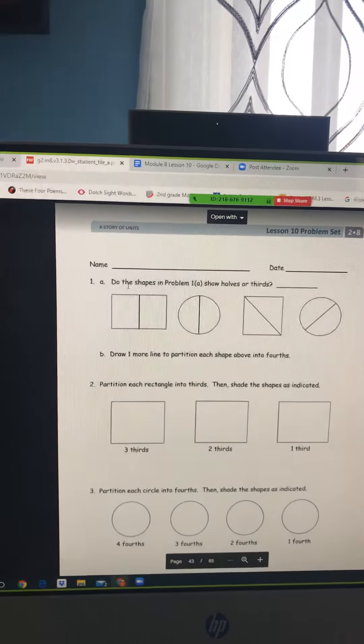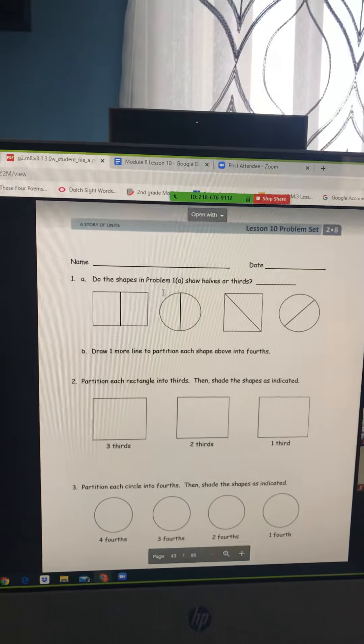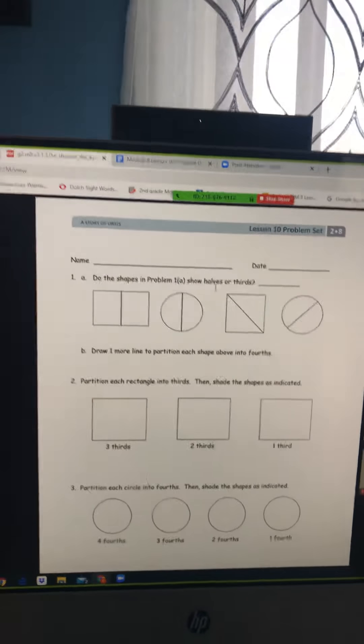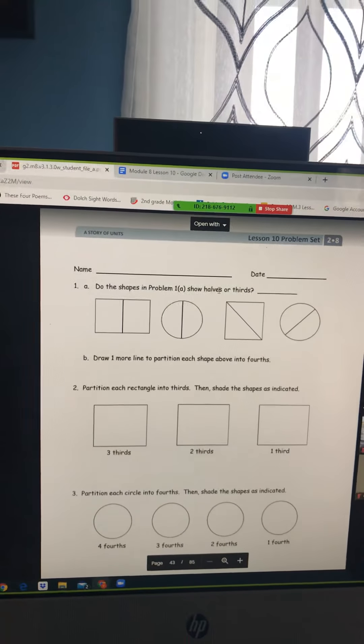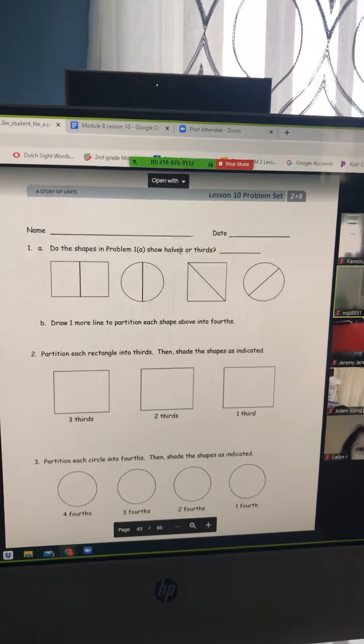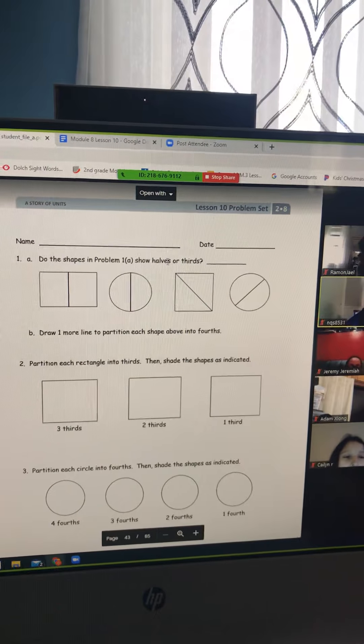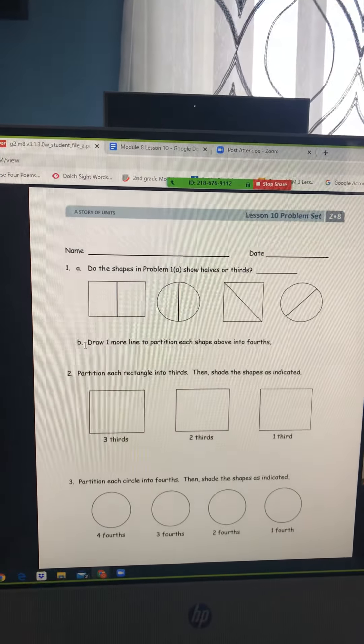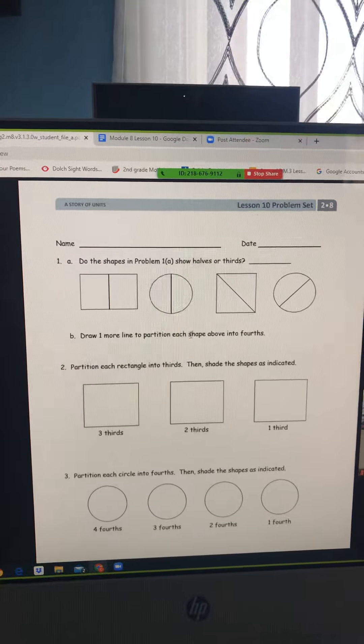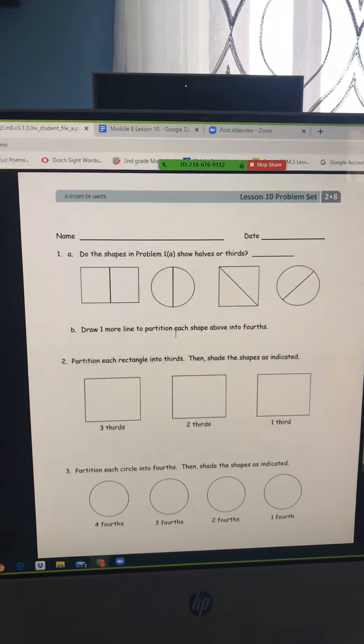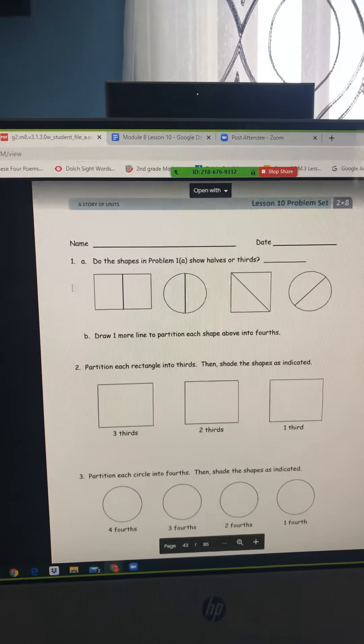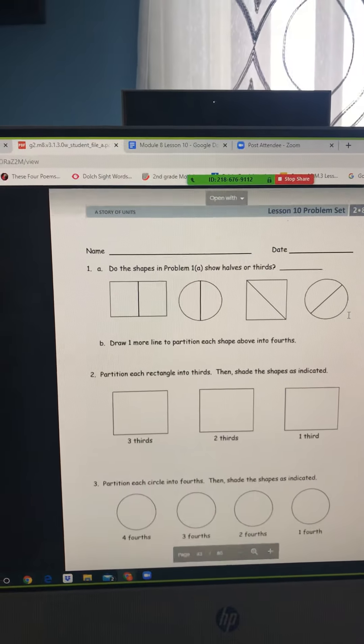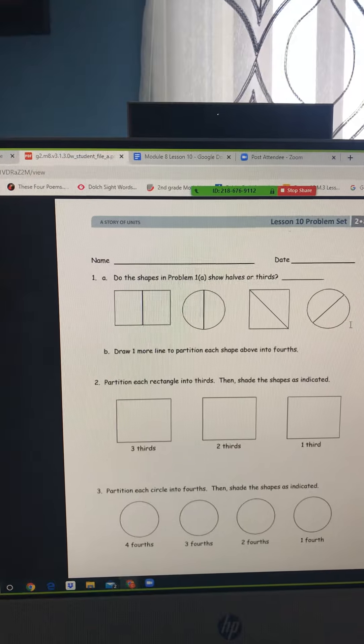It says, do the shapes in Problems 1A show halves or thirds? Halves means two equal pieces. Thirds means three equal pieces. Fourths means four equal pieces. You need to answer this question with a word. B says, draw one more line to partition each shape into fourths. You're going to draw one more line in these shapes to turn it into fourths.